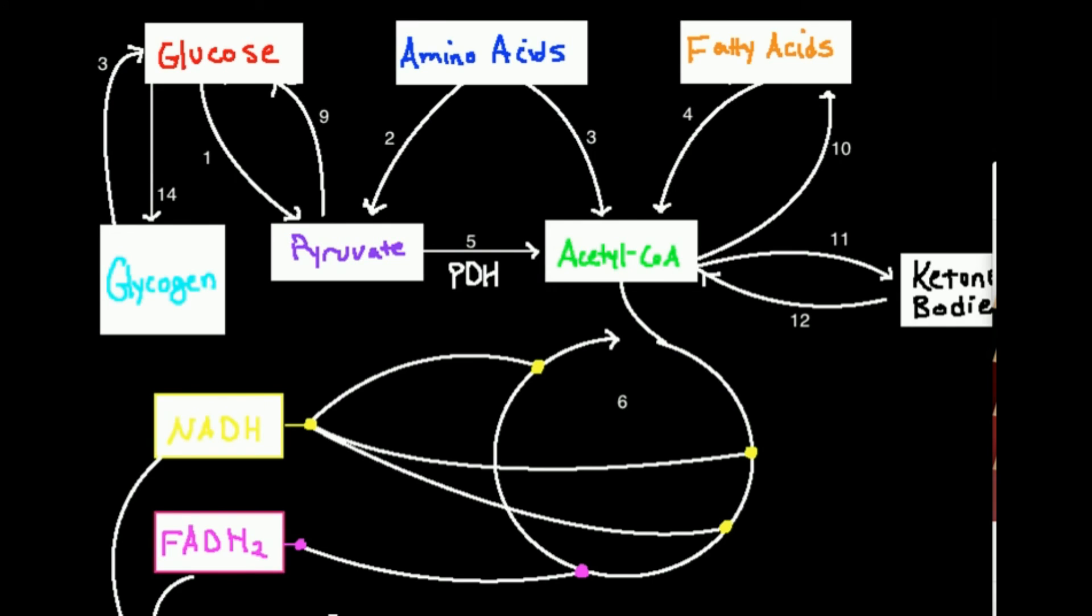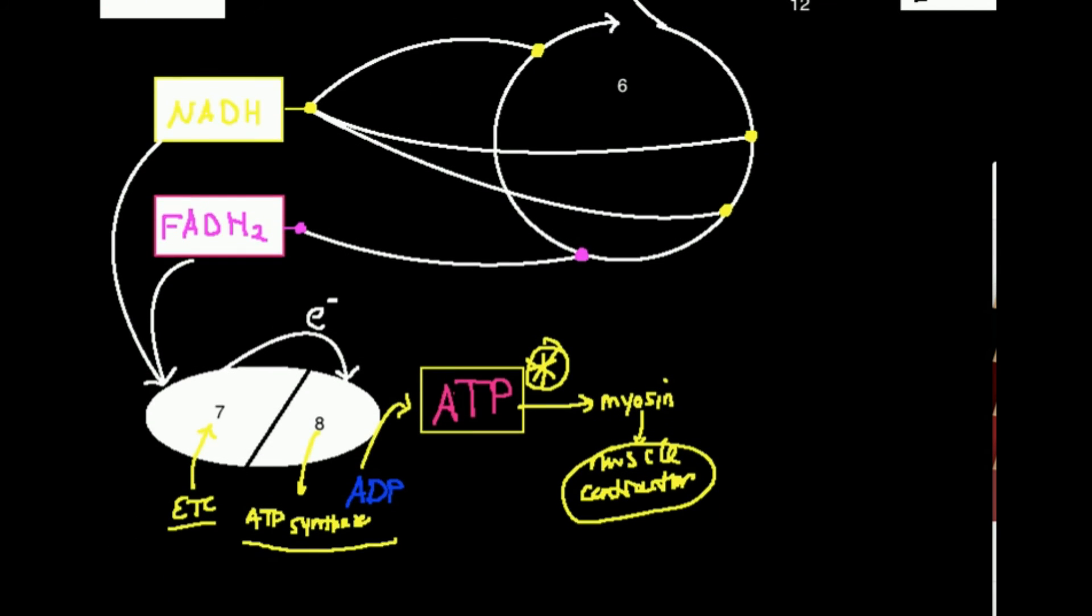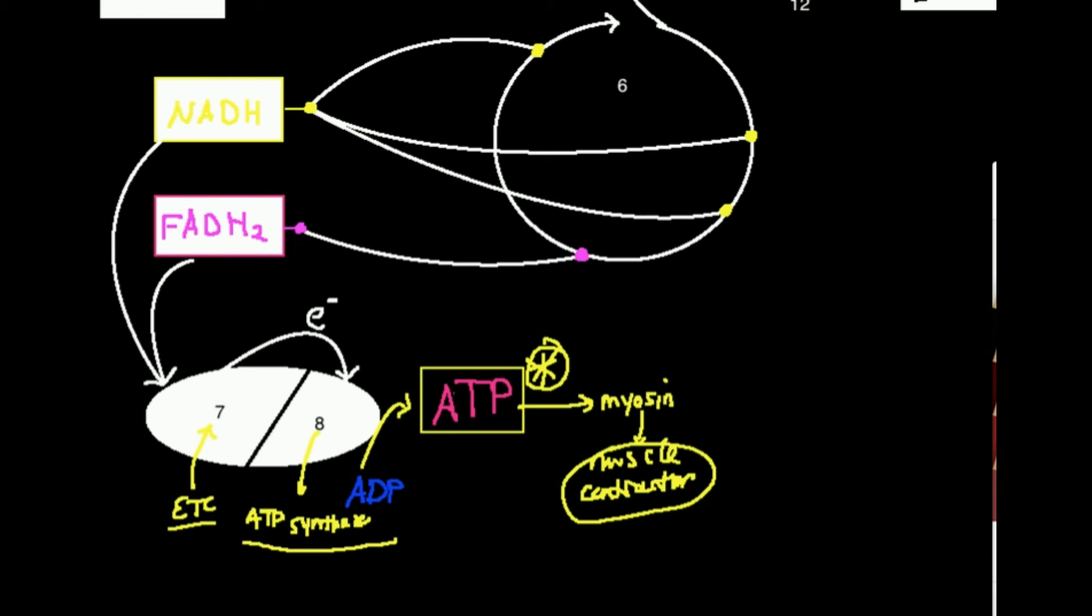Our central coenzyme, acetyl-CoA, is going to move into the Krebs cycle, power the synthesis of NADH and FADH2, and those power the electron transport chain, which powers ATP synthase, which gives us ATP. So that's going to be, this is going to be part one of our metabolic roadmap.